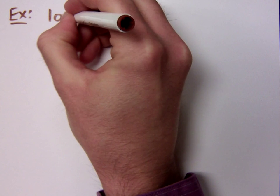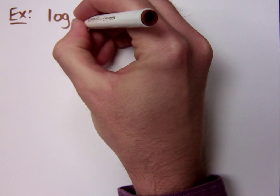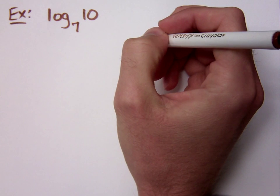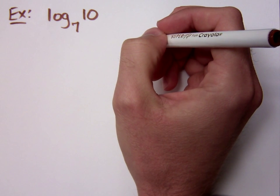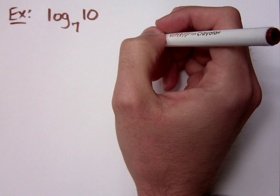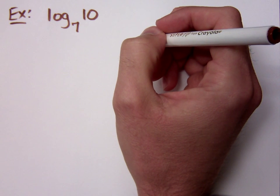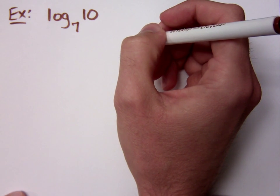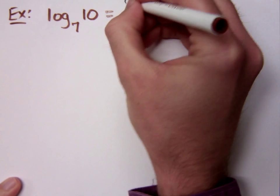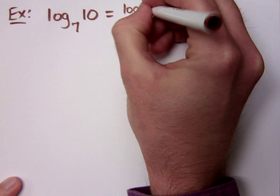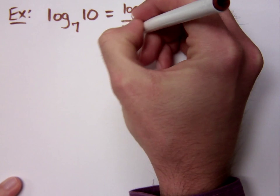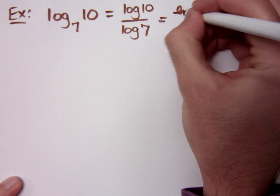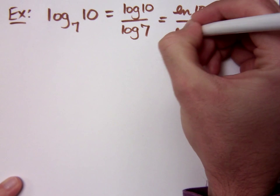If I wanted to find this log, log with a base 7 of 10. Now 7 and 10 don't have a base that's common, do they? No, but since we do have a calculator, we can just type in log of 10 over log of 7, but you could also say the natural log of 10 over the natural log of 7.